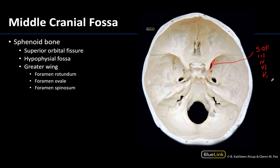Just posterior to those optic canals you will have this divot in the bone — a saddle-like region referred to as the hypophysial fossa — and it is going to accommodate a portion of the pituitary gland. So the hypophysial fossa is where the pituitary gland will sit, and as you can see it is very well protected by bone, as that is a very important gland.